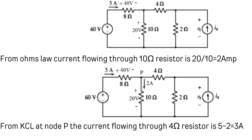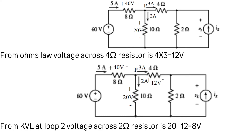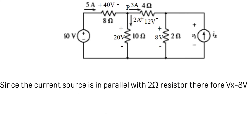From Ohm's law, the current through the 10 ohm resistor is 20/10 = 2 amperes. At node P, 5 amperes flows through the 8 ohm resistor and 2 amperes through the 10 ohm resistor, so the current through the 4 ohm resistor is 5 − 2 = 3 amperes, giving a voltage of 3 × 4 = 12 volts. Applying KVL again, the voltage across the 2 ohm resistor is 20 − 12 = 8 volts. Since the current source is in parallel with the 2 ohm resistor, Vx = 8 volts.